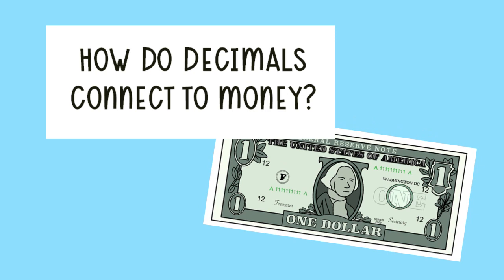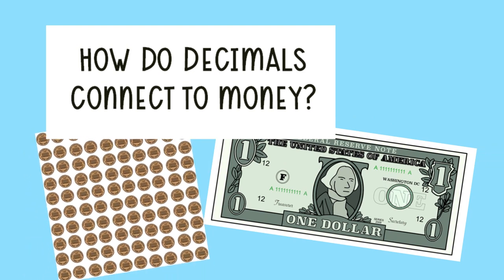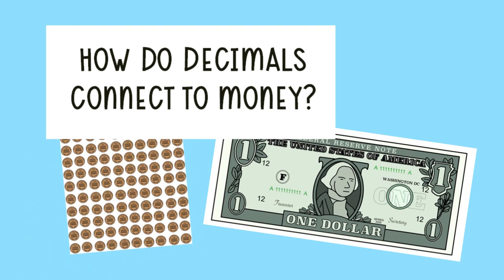We can divide that one dollar into 100 equal pieces or parts. Each of those equal pieces is one penny. We would say that one penny is one hundredth of a dollar. And there's your decimal.